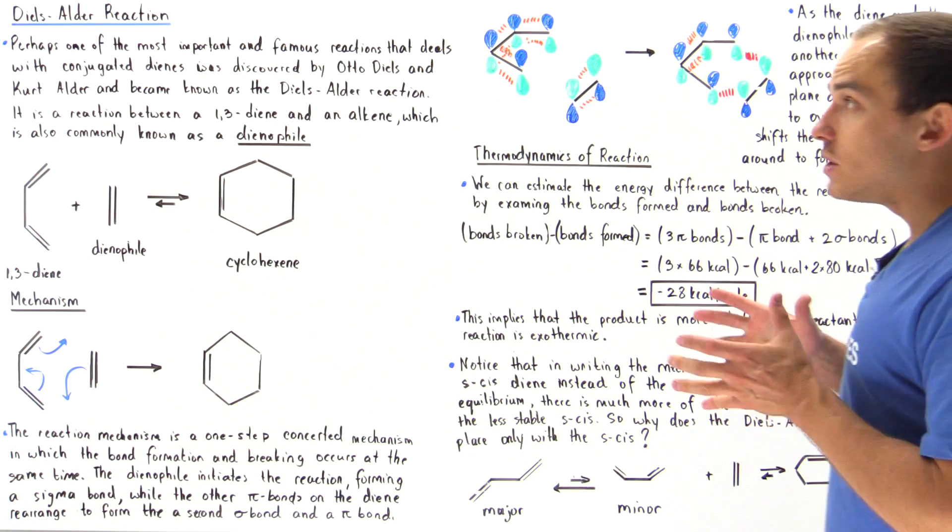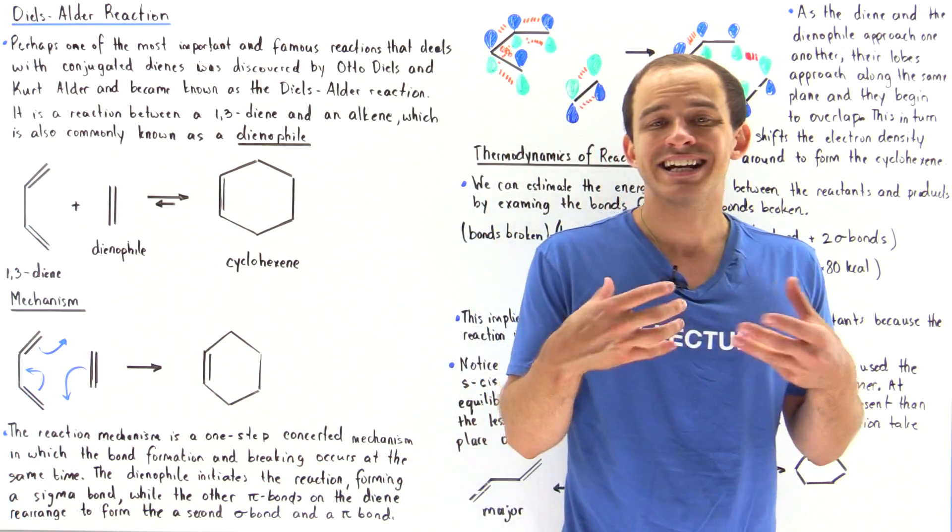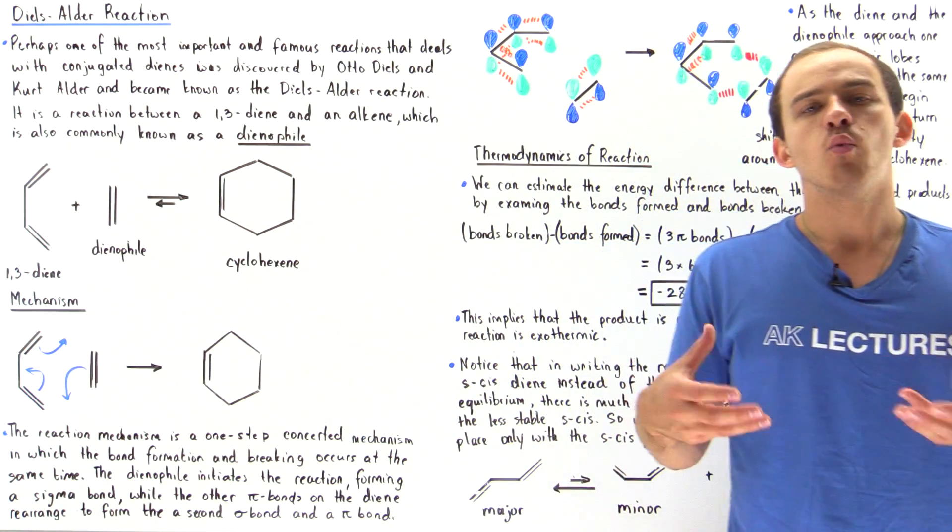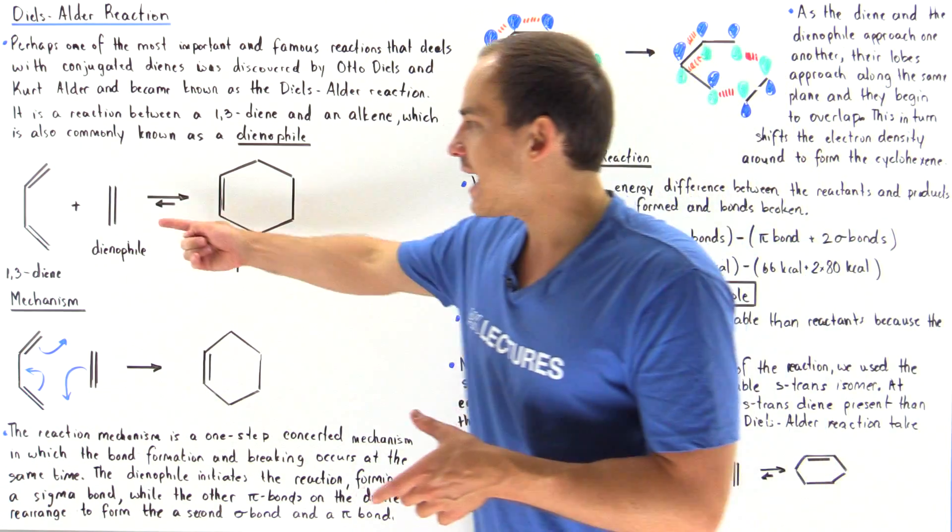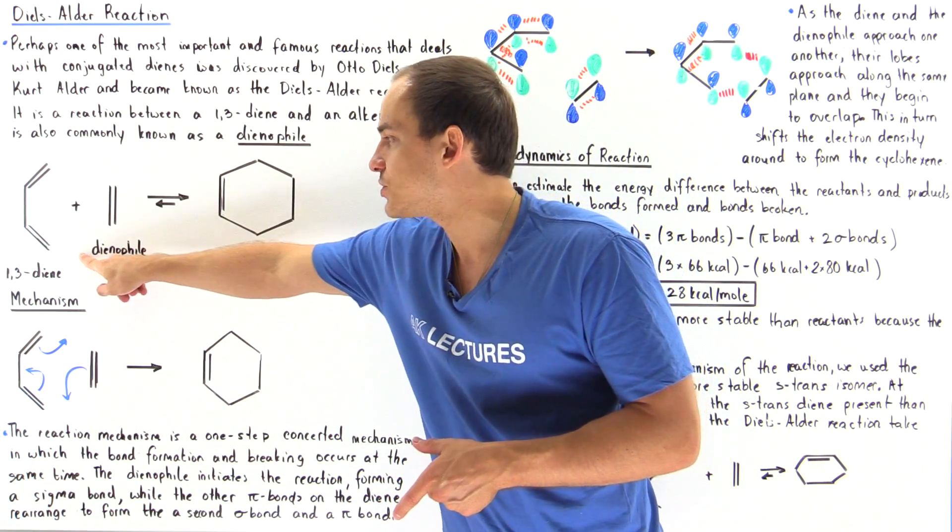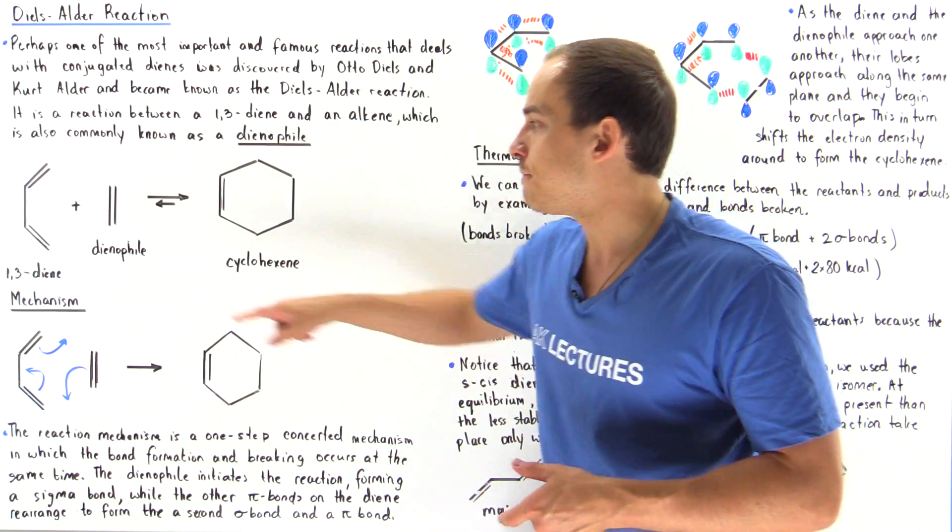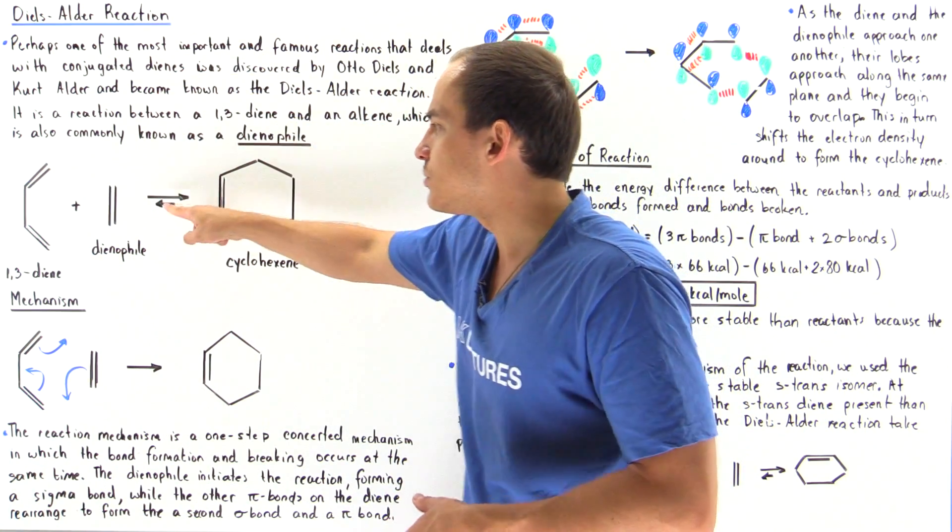So once again, the Diels-Alder reaction is a reaction that takes place between a conjugated system, the 1,3-diene, and a simple alkene. In this case, we use this alkene here, which is also known as the dienophile. 'Phile' means loving and 'di' means our two double bonds. So this basically interacts with the 1,3-diene.